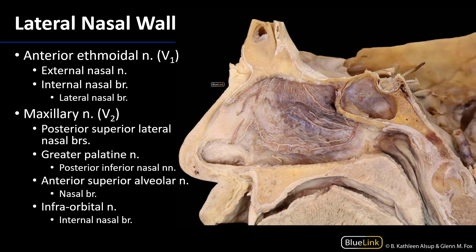Now let's look at the lateral nasal wall. We can still see some of those olfactory nerves — cranial nerve 1. We can also see a couple of branches of V1. The first is the external nasal nerve, which is a branch of the anterior ethmoidal nerve — it can pierce through the nose to serve some of the skin of the superior portion of the nose. The other V1 branch descending down is the lateral nasal branch of the internal nasal branch of the anterior ethmoidal nerve. Recall, the internal nasal branch has both medial and lateral branches: the medial branch is on the septum, and the lateral branch is on the lateral wall.